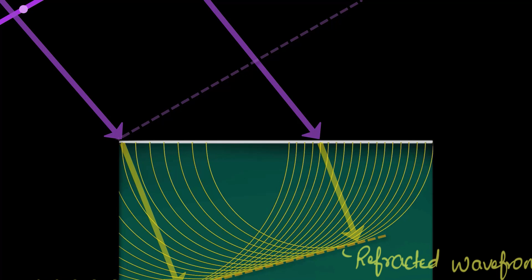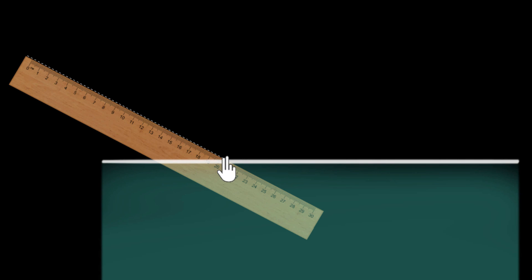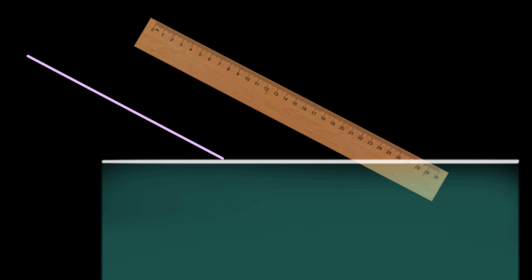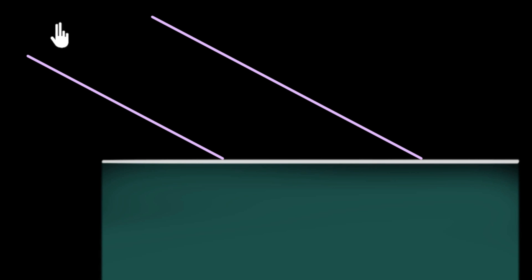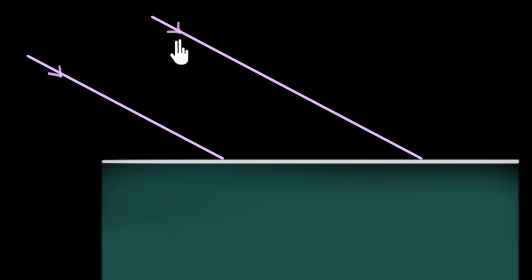Now let's draw this step by step on paper and see if we can prove Snell's law. Here's our air and water. I'm going to draw two incident rays of light parallel to each other — basically imagining that the source is far away. You might recall that when the source is far away, the rays of light become parallel to each other; the source is at infinity. And when that happens, the wavefronts are plane wavefronts — when I draw them here, they'll be straight lines.